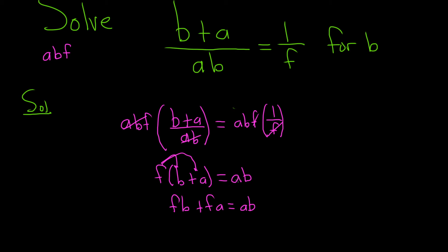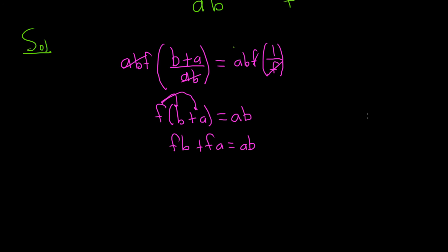Again, we're looking for b. We have to keep in mind what we're trying to do. So b is still on both sides of this equation. So we want to get all the b's together.